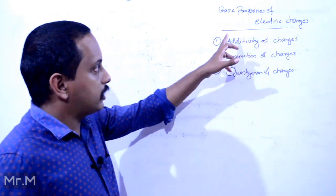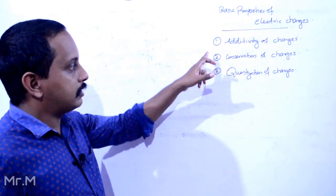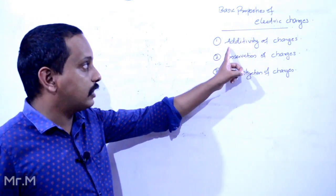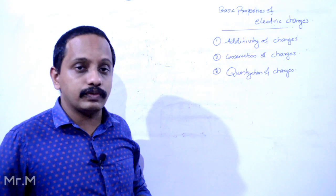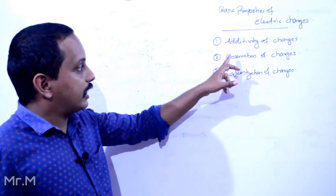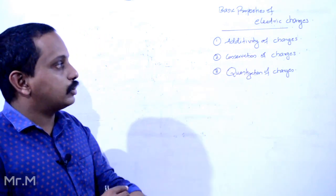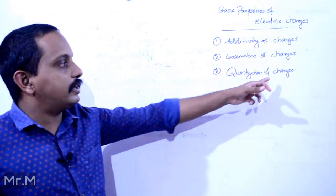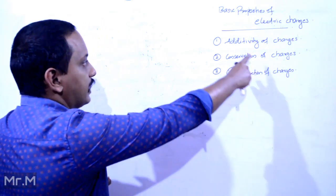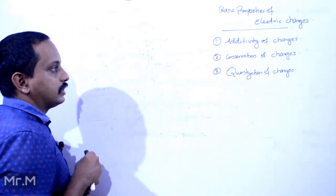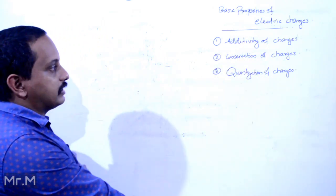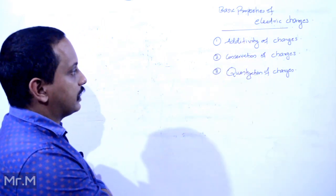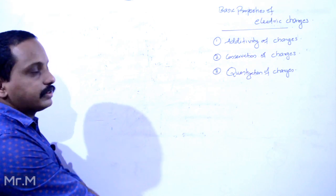The basic properties of electric charges consist of three properties. First, we will talk about the additivity of charges. Second, conservation of charges. Third, quantization of charges.